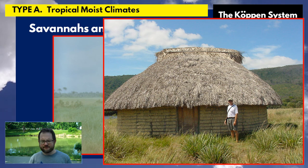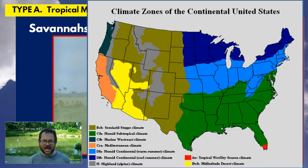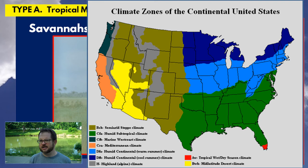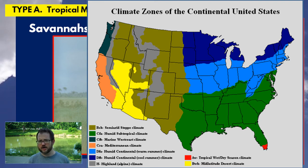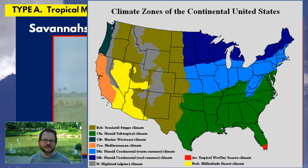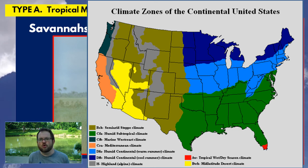Some type A climates are savannas — a savanna is a tall grass prairie, like what you'd see in a National Geographic special where tigers and elephants are hiding in tall grasses. Big chunks of Sub-Saharan Africa are examples of type A climates. In the United States, our only area with type A climate would be extreme southern Florida — the Everglades, for example, where it never really freezes and there's no shortage of water.